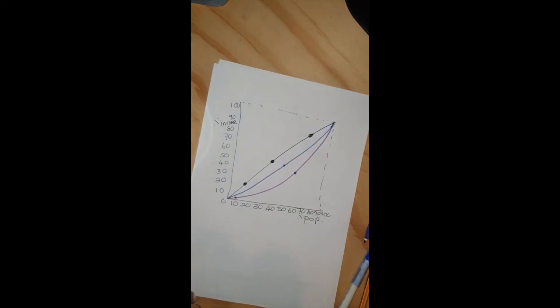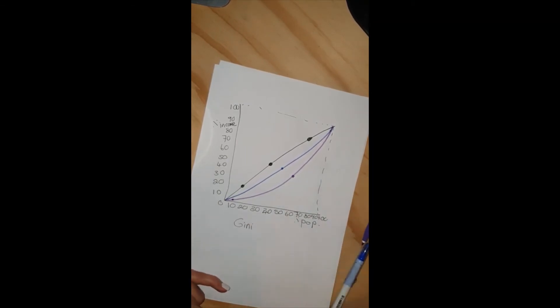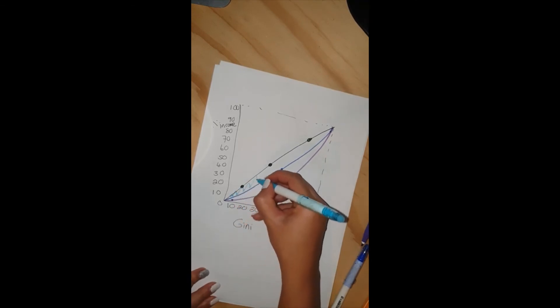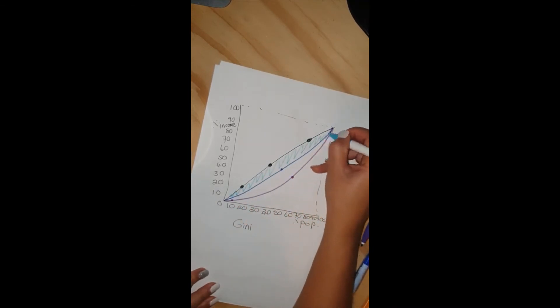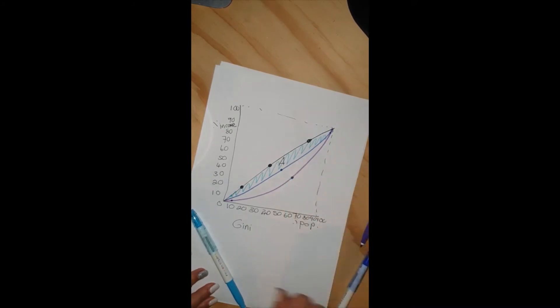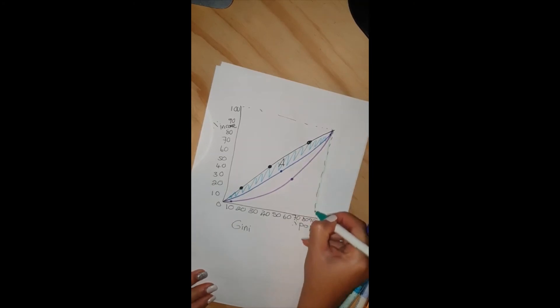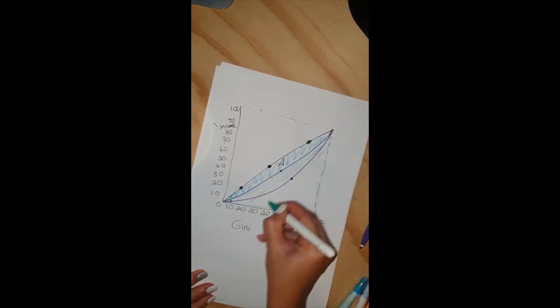The Gini coefficient - we call this area A, and we call this area B.